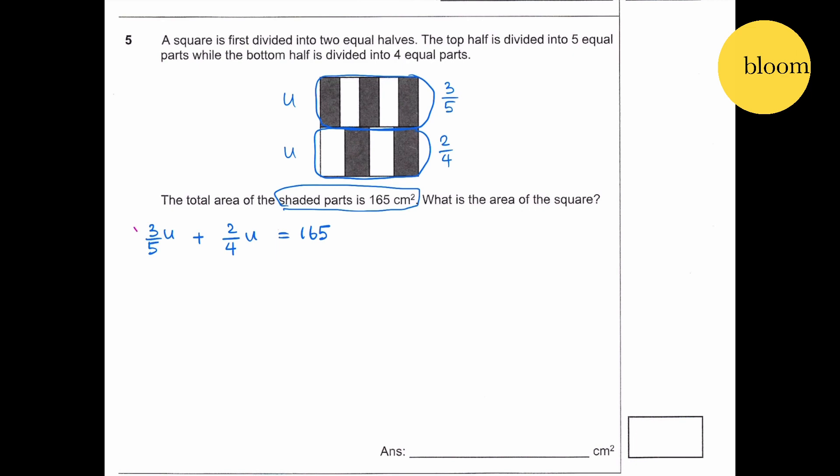So times 4, times 5, it gives you 12U plus 10U over 20 equals 165, and 22U equals 165 times 20, which gives you 3,300. Therefore, U equals 3,300 divided by 22, which gives you 150.